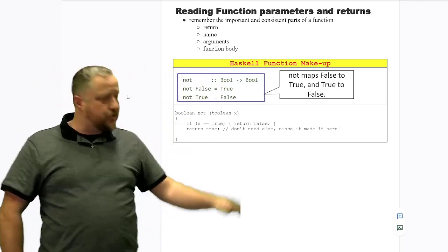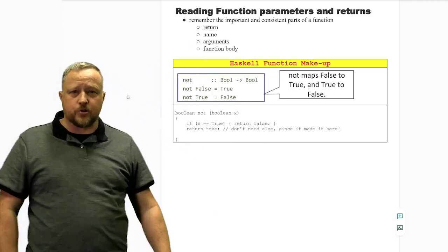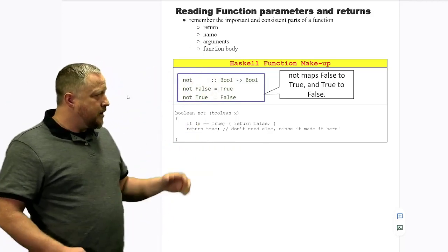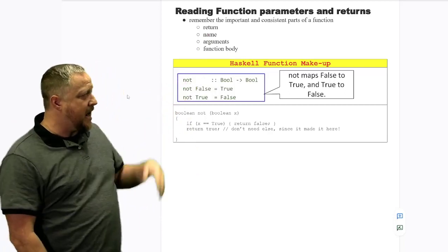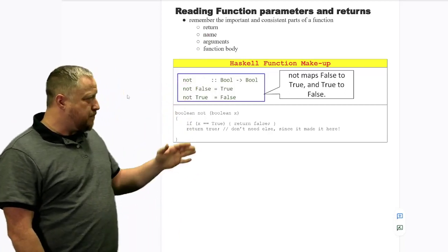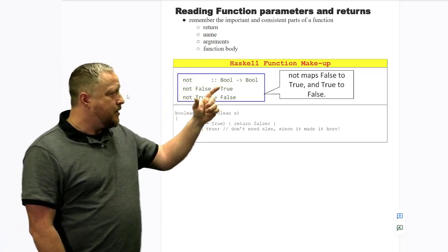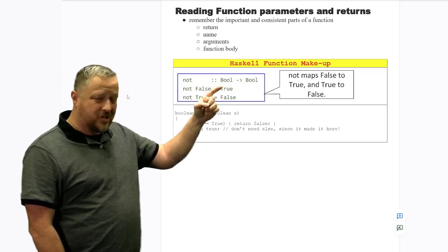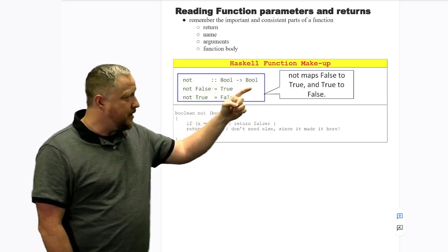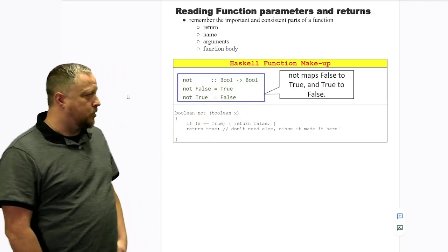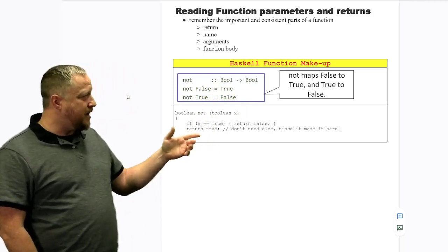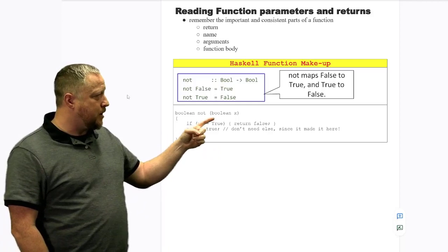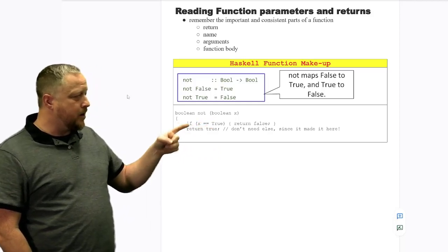Every single language is going to have exactly those four features, very similar to a couple of videos from previous. Now I'm showing you what we have here for Haskell. In the spot that I'm highlighting right now, this function is going to accept a boolean and return a boolean. That's very similar to what you might have in C++. We're going to be accepting a boolean and returning a boolean.